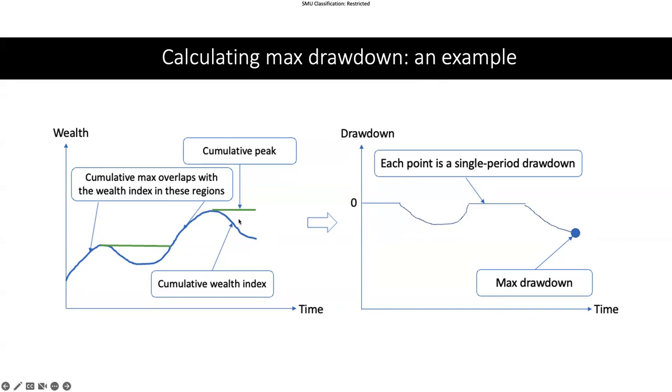If we take the difference, take the gap and then convert it to percentage terms by dividing it and converting to percentage, then this actually becomes the single period drawdown.